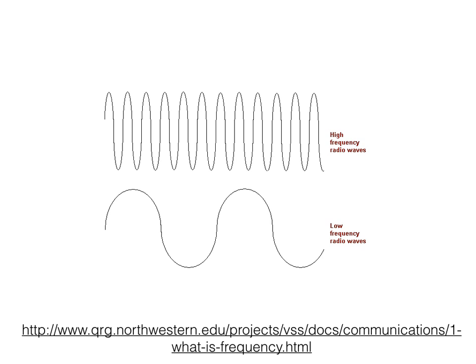The next parameter is frequency. Frequency is the speed of a sound. We measure frequency in hertz, also known as cycles per second. We perceive frequency as pitch, or how high or low a sound is.